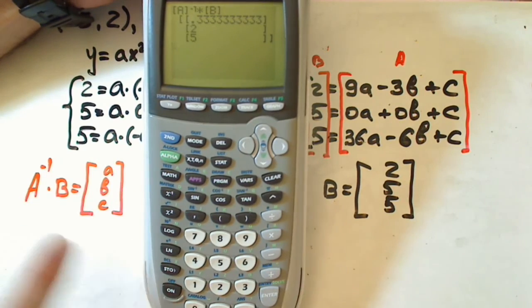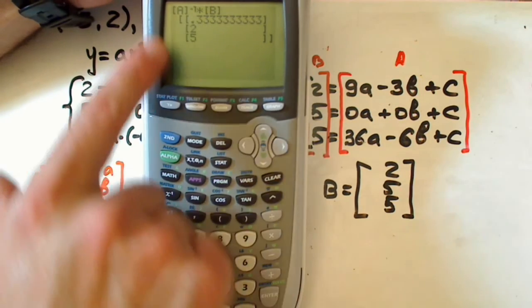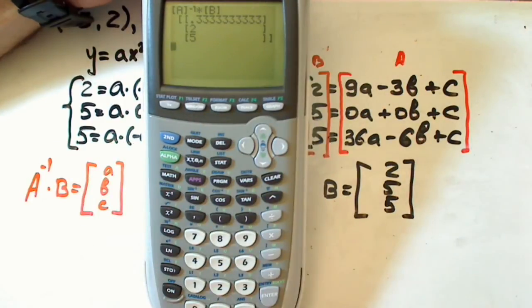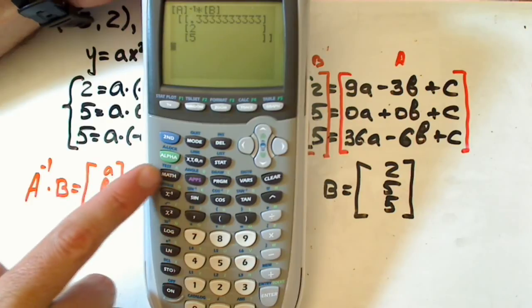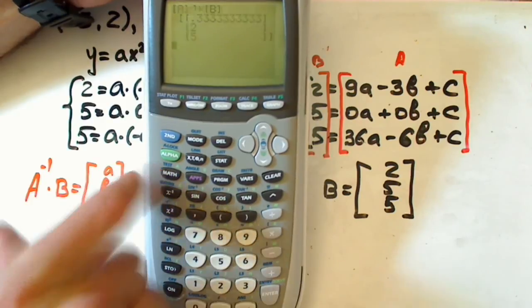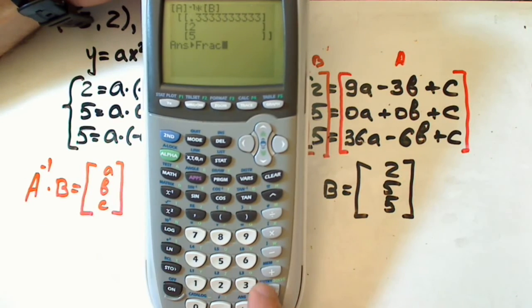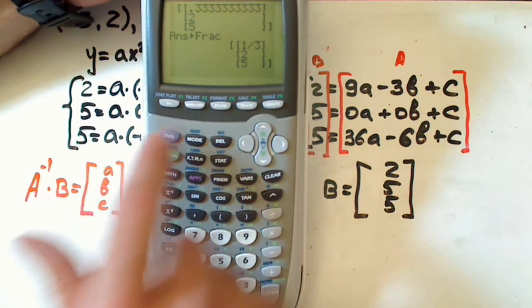And now this is our answer which is a, b, c. But you see, now here we have a small approximation. We should change it to fractions, just using math right here, fraction is the first one, enter, and enter one more time. And now we have our answer in a fraction form.